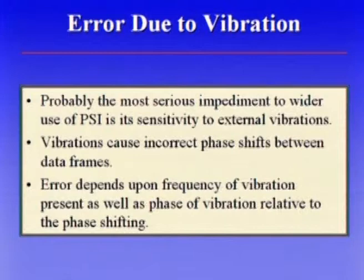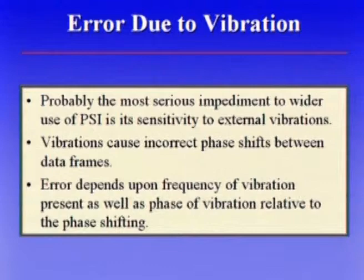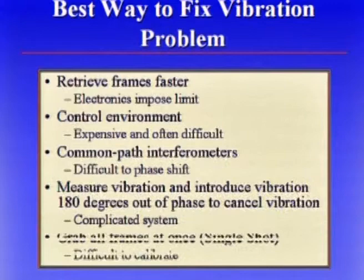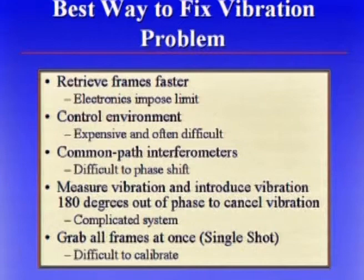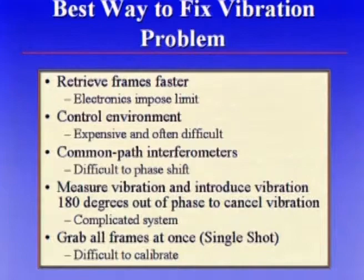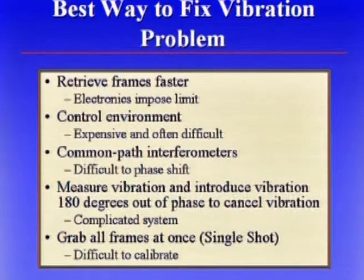Probably the biggest limitation of the use of interferometry is vibration. With vibration present, the results you get are often incorrect. There's a lot of interest in getting around the vibration problem. One way is to take data faster — easier said than done. Another is to control the environment and get rid of vibration — sometimes very difficult. Another is a common path interferometer so both reference and test beams see the same vibration — difficult in many cases. The last approach is to grab all the frames at once — taking three, four, or five frames all at once to freeze the vibration. That is probably the best approach, though there are some calibration problems.